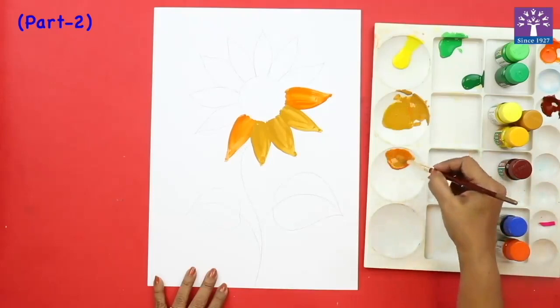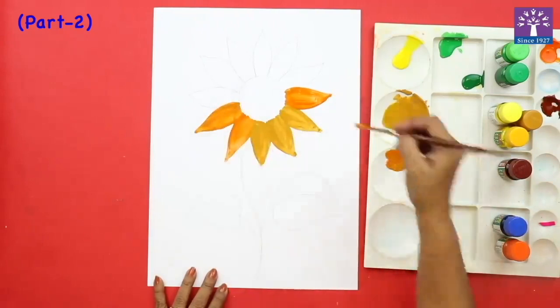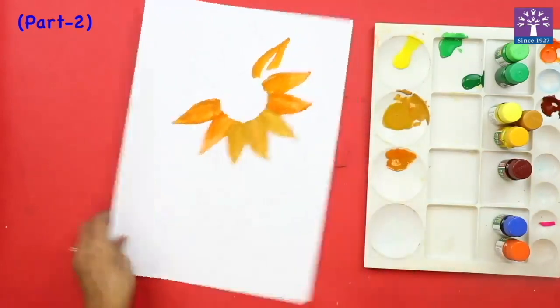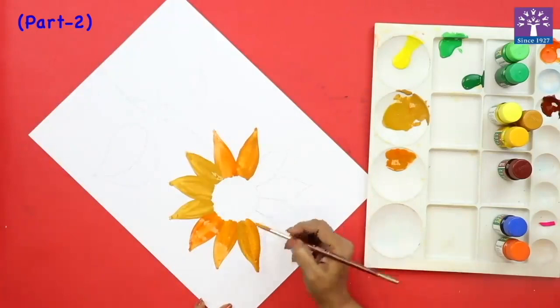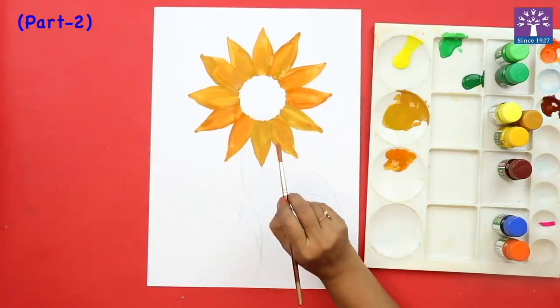Mingle yellow with the orange. So we have finished coloring a dark shade of yellow or ochre yellow on the petals.